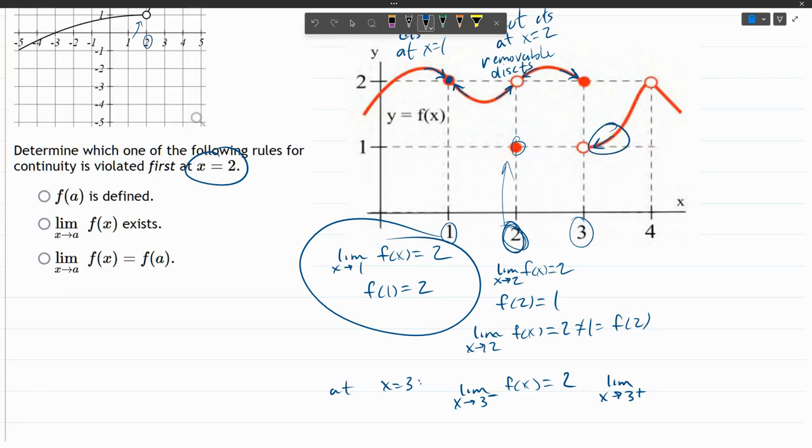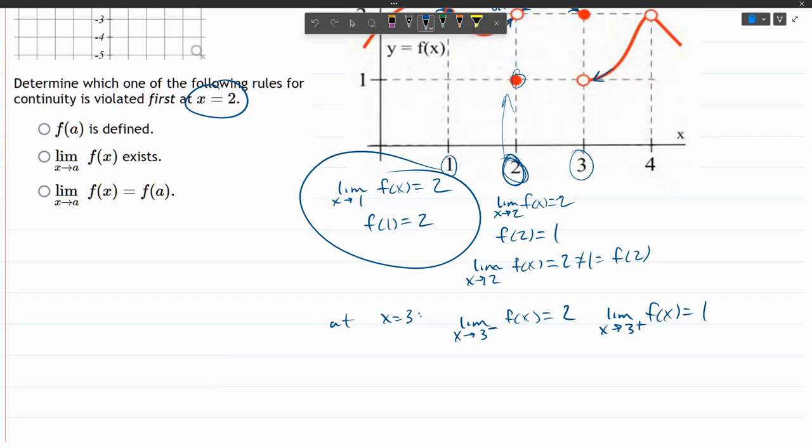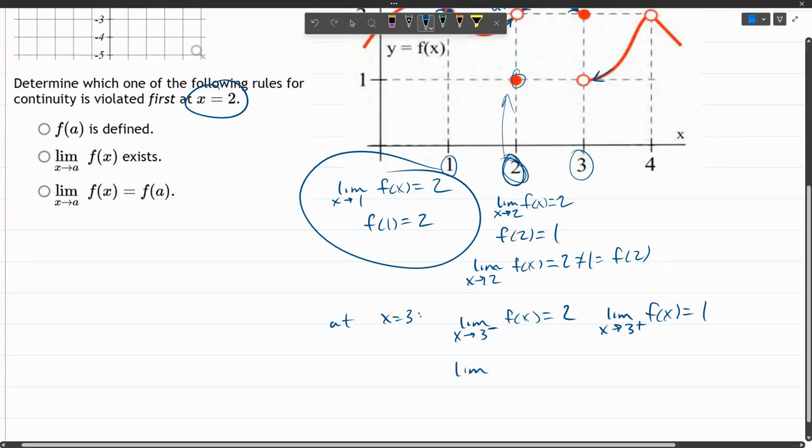Limit as x approaches three from the right, from positive land, that's coming in from this side. What value are we approaching? Our y value will be one. So the problem is, because these two one-sided limits disagree, if you put them together, x approaches three, f of x, it can't be two and one. So we say this does not exist.